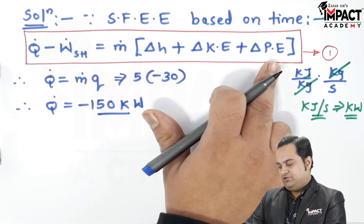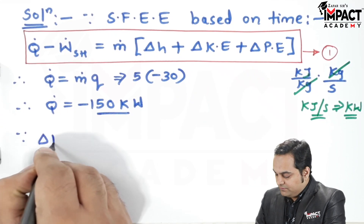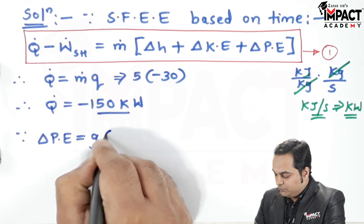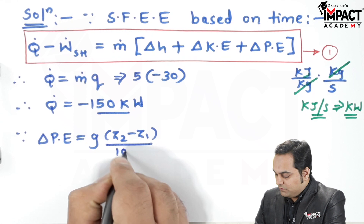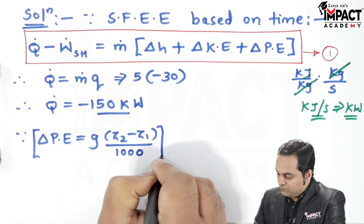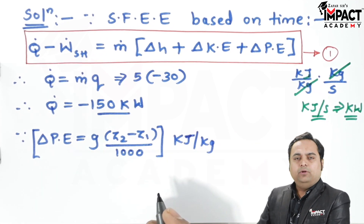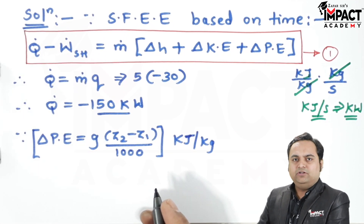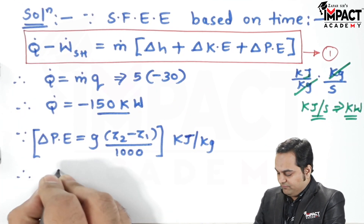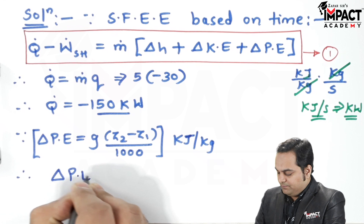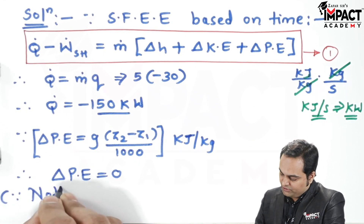Next we find change in potential energy. The change in potential energy is given by g times (z2 minus z1) divided by 1000, in units of kilo Joule per kg. Since nothing is mentioned in the problem about height or level difference, we set z1 equal to z2, and therefore the change in potential energy equals zero.